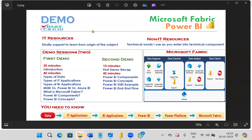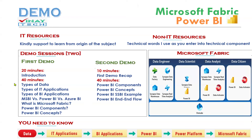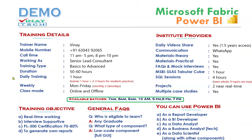Kindly provide your email ID and contact number in the chat room. For the first demo, this introduction takes 20 minutes. My name is Vinay. My contact number and call timing is 11 a.m. to 5 p.m. and 8 p.m. to 10 p.m. I am a working senior lead consultant. Training is from basics to advanced, duration 50 to 60 hours. Daily training is one hour only.